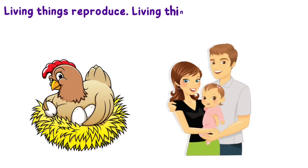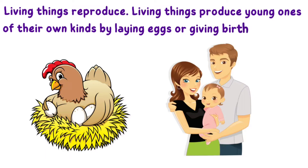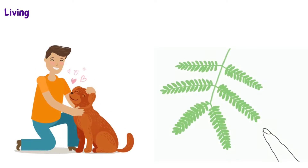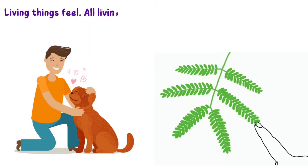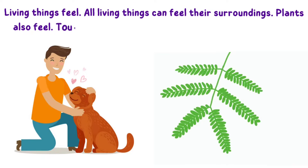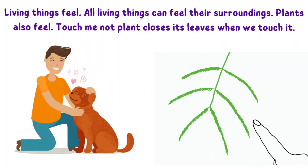Living things reproduce. Living things produce young ones of their own kinds by laying eggs or giving birth to babies. All living things can feel their surroundings. Plants also feel. The touch-me-not plant closes its leaves when we touch it.